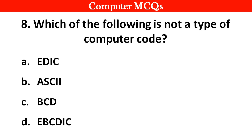Next question. Which of the following is not a type of computer code? Options A: EBCDIC, B: ASCII, C: BCD, D: EDIC. Right answer is option A: EBCDIC.